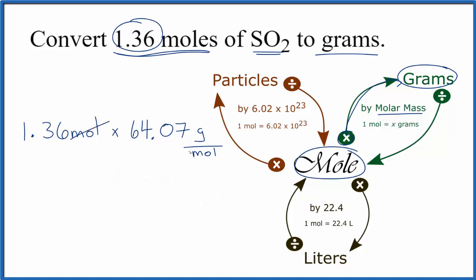Now we multiply, we have moles on top and the bottom, they cancel out, that leaves us with grams, that's what we're looking for. So we know we set this up right when the units cancel out, leave us the one we're looking for.